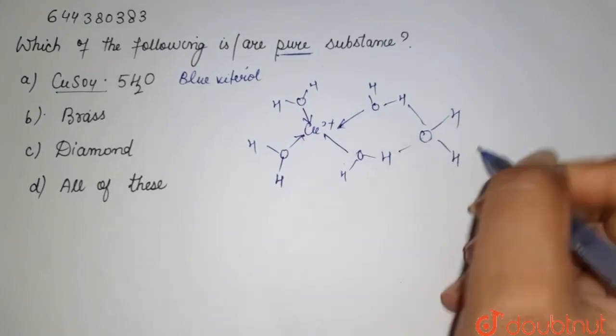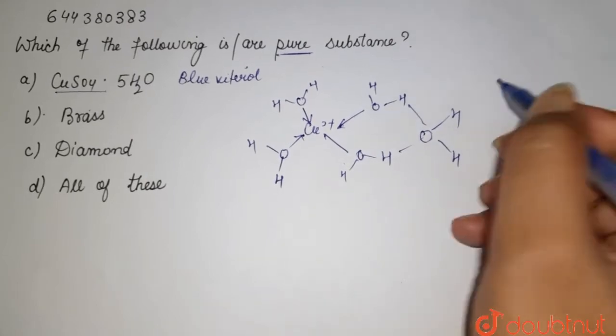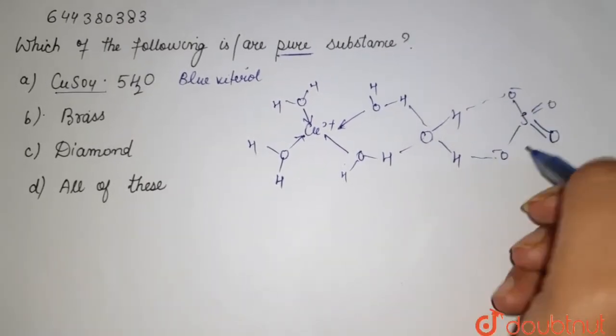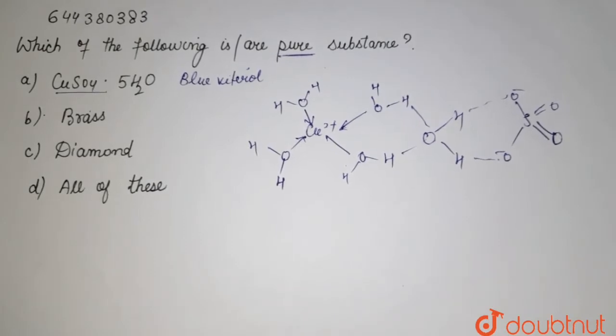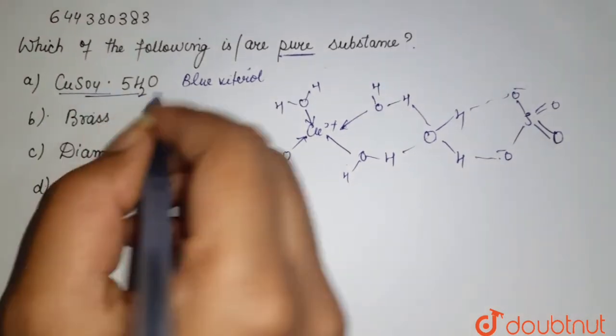Which is further connected with your sulfate. So this is the structure of your CuSO4.5H2O. It is a pure substance as its composition is constant. This is the fixed composition.